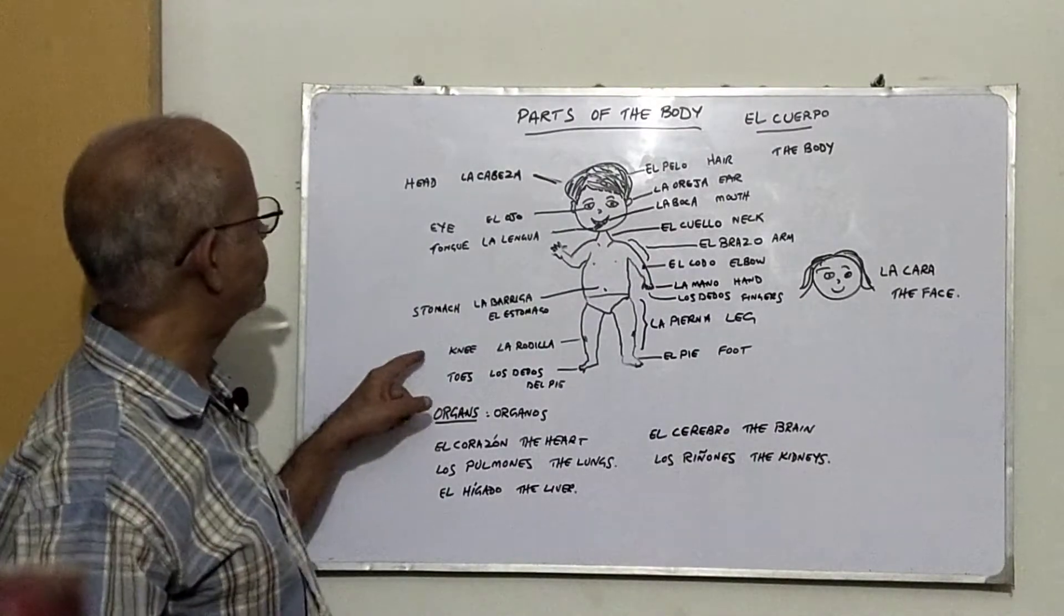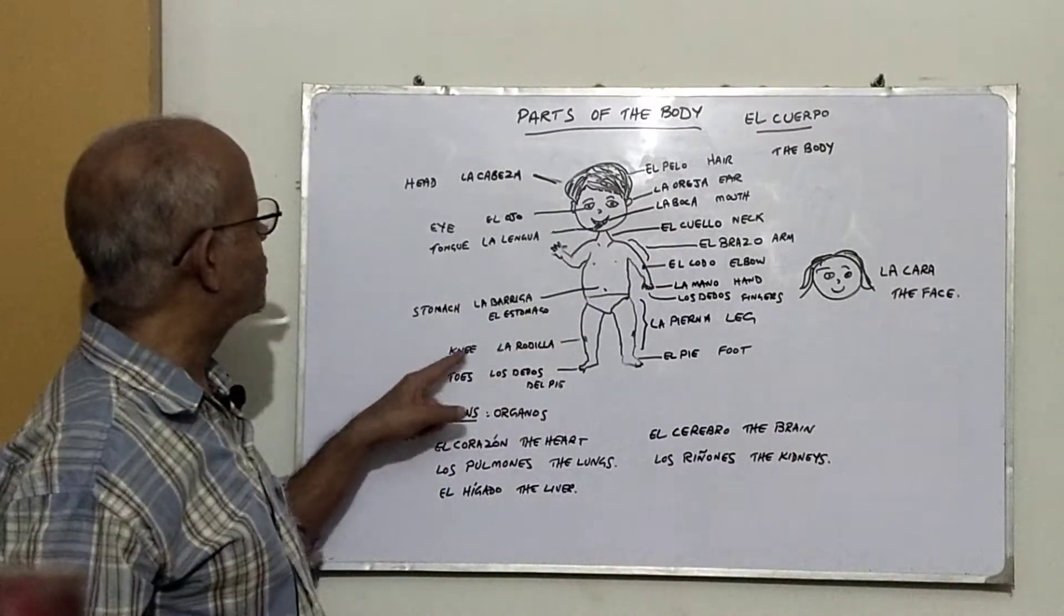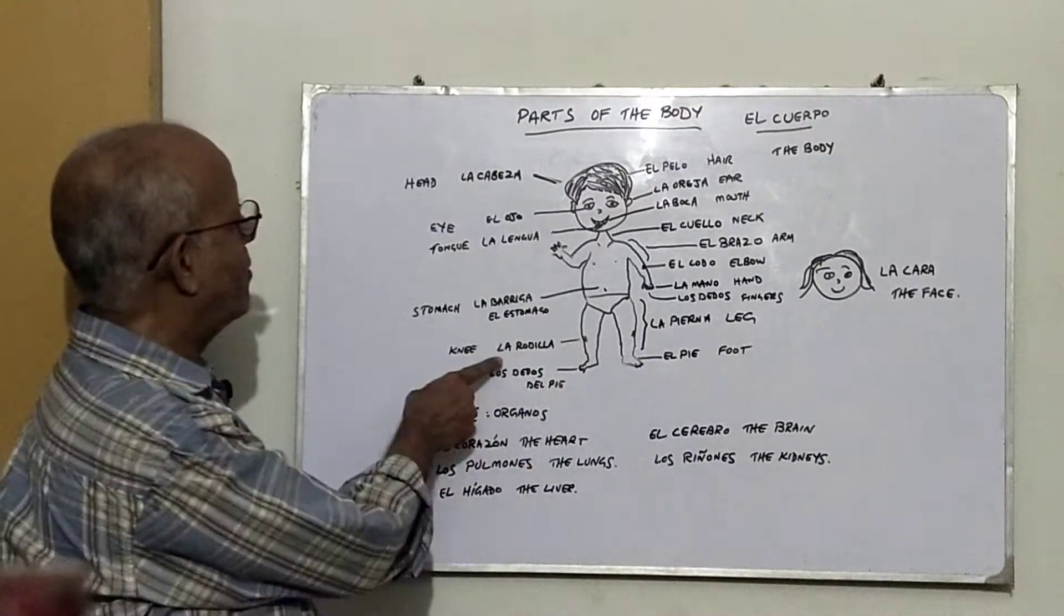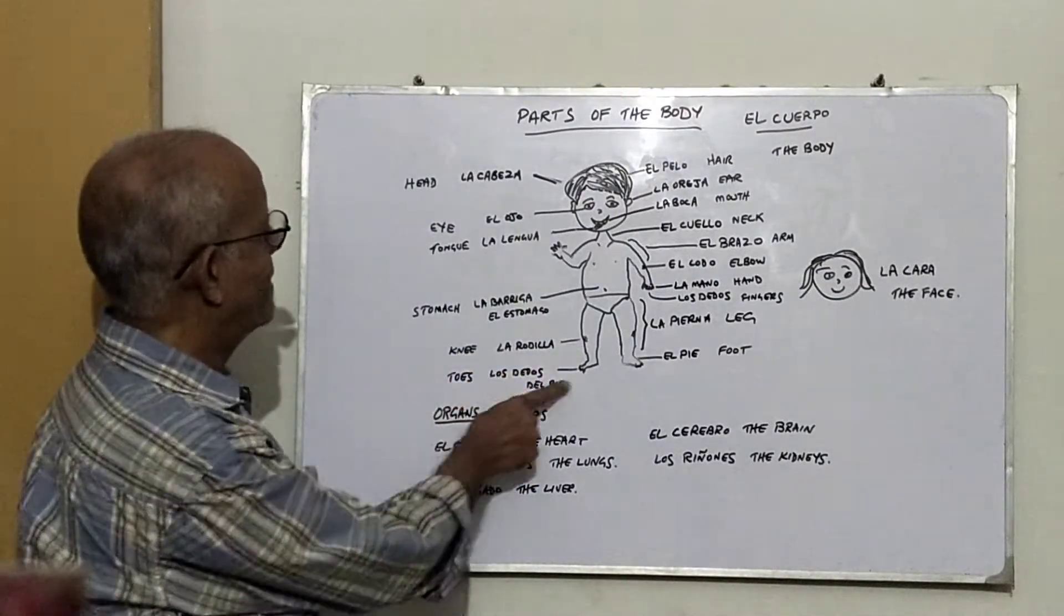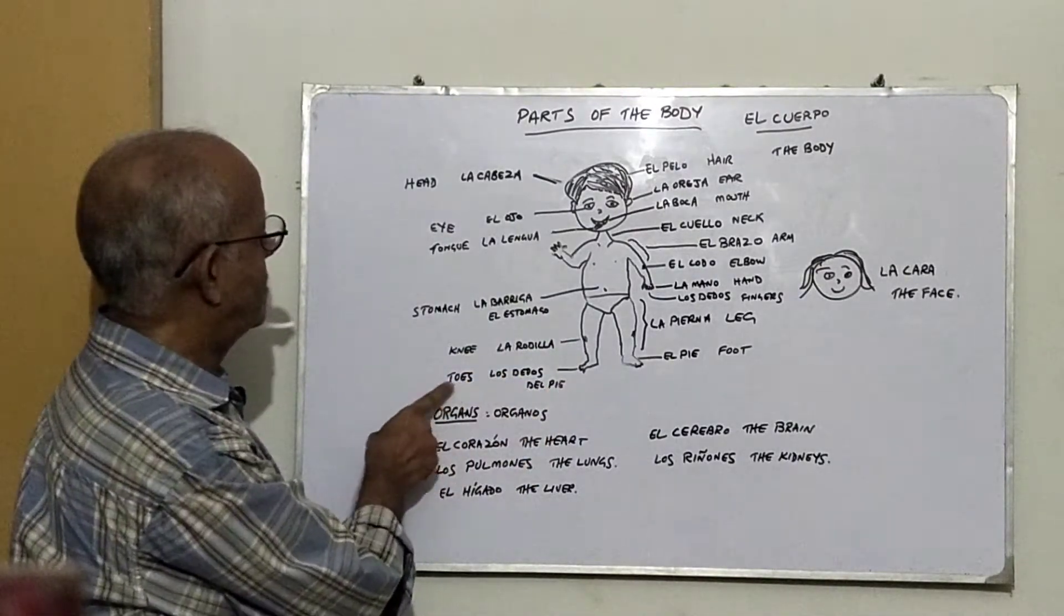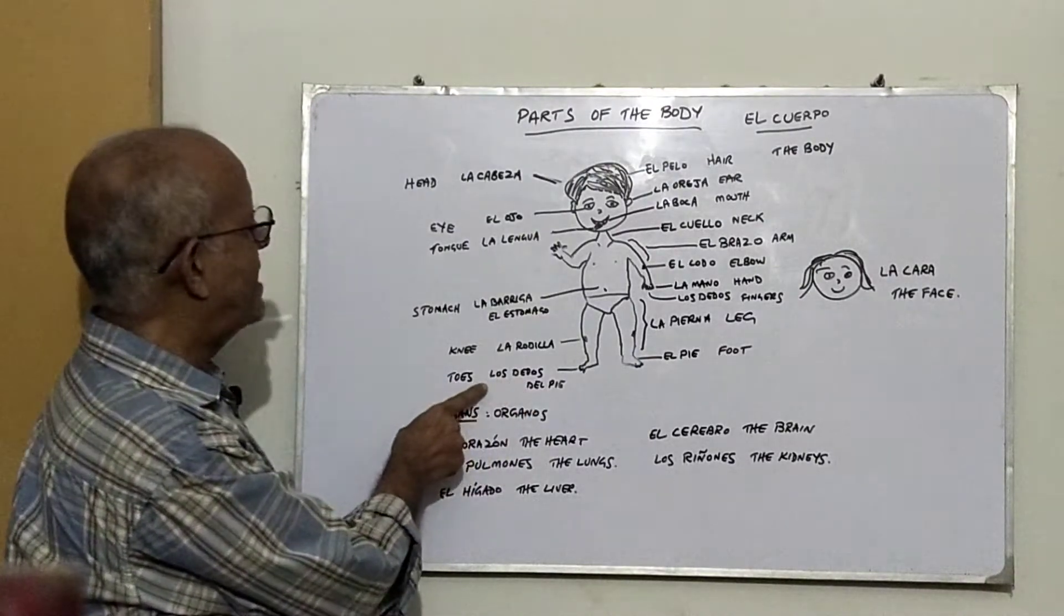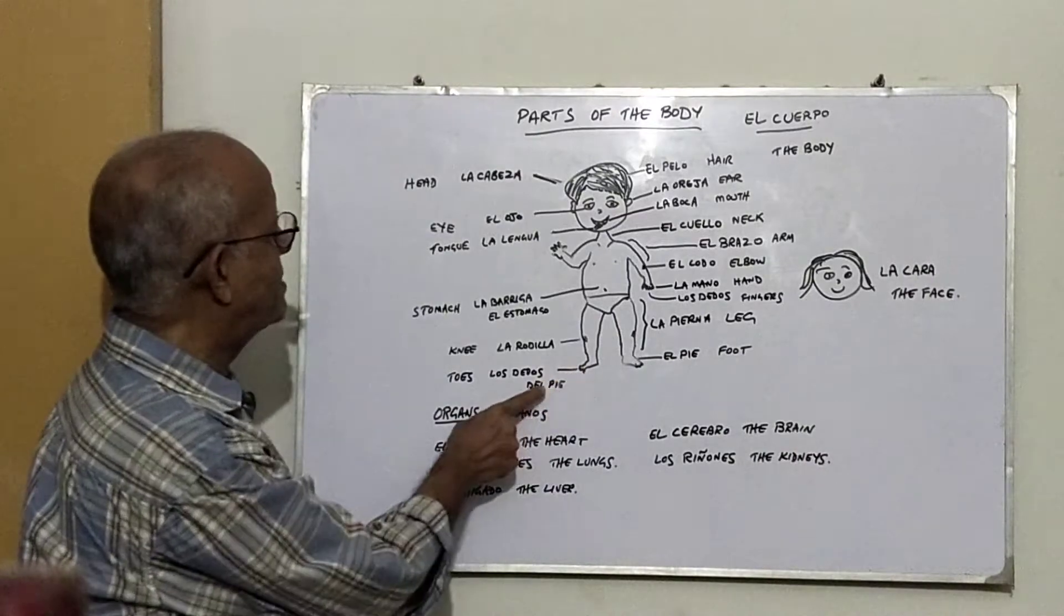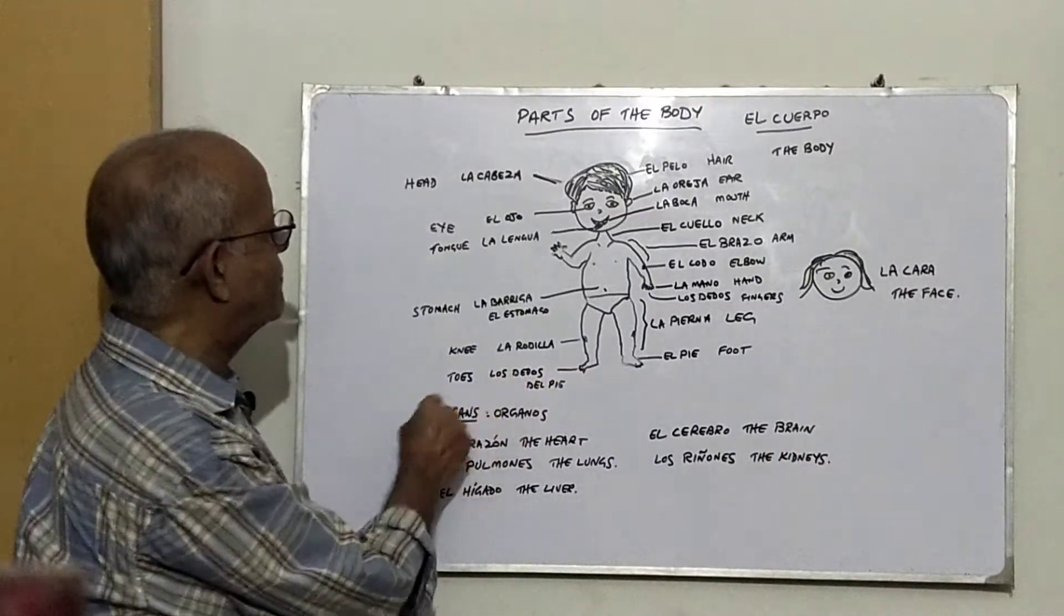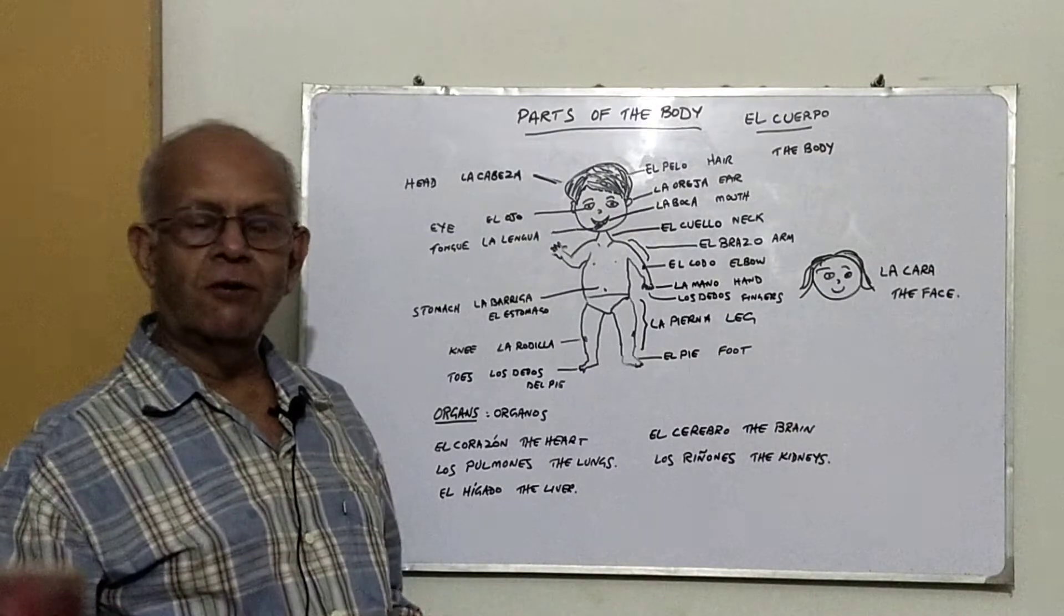The knee is called la rodilla. The toes - los dedos del pie. Pie is foot. The fingers of the foot - in Spanish we don't have any word for toes, they are called the fingers of the foot, los dedos del pie.